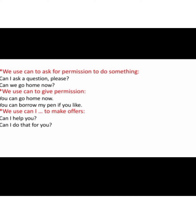We use can to ask for permission — like 'Can I ask a question please?' or 'Can we go home now?' We also use can to give permission — like 'You can go home now' or 'You can borrow my pen if you like.' And we can use 'Can I' to make offers — like 'Can I help you?' or 'Can I do that for you?'